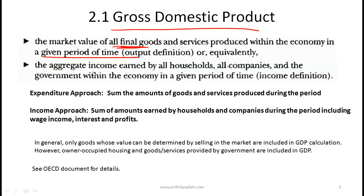The other way of looking at GDP relates to the equivalence between output produced by firms and income. GDP is also the aggregate income earned by all households, all companies, and the government within the economy in a given period of time. This is called the income definition. These are the two definitions of GDP.